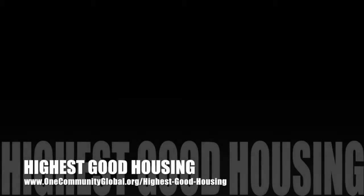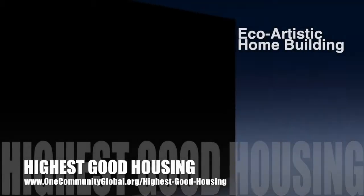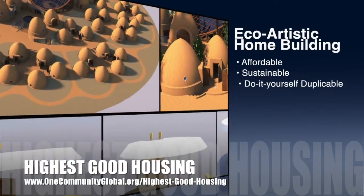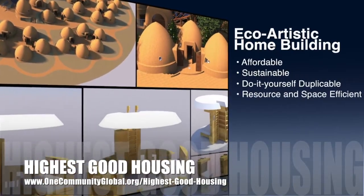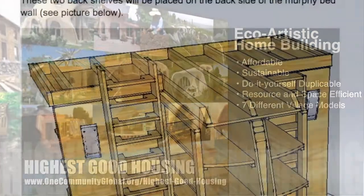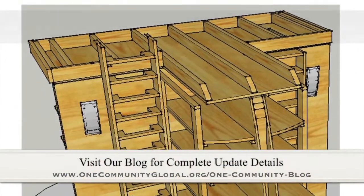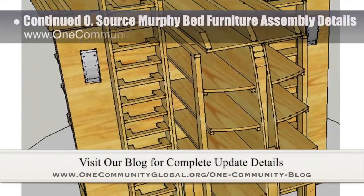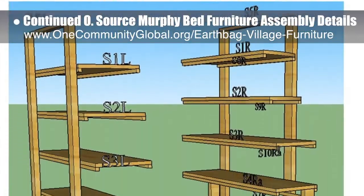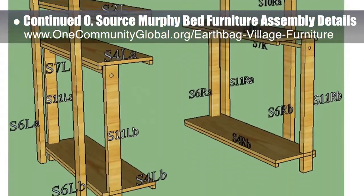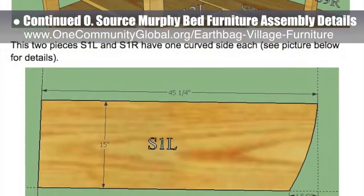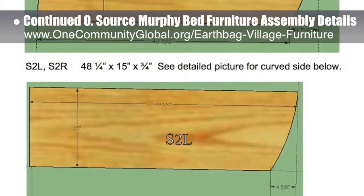OneCommunity's approach to Highest Good Housing is eco-artistic home building that is affordable, sustainable, do-it-yourself duplicable, resource and space efficient, and consists of seven different sustainably constructed village models. This week, the core team working on Highest Good Housing continued progress on the assembly specifics for the open source Murphy bed furniture. This work is happening behind the scenes and will be part of the EarthBag Village and the upcoming crowdfunding campaign. We finished cutting lumber and labeling pieces for two back shelves and began exploring a new shelving and ladder design.